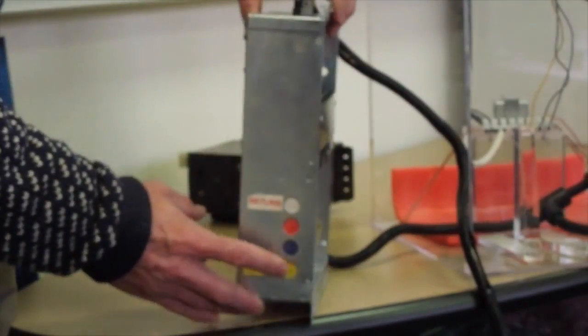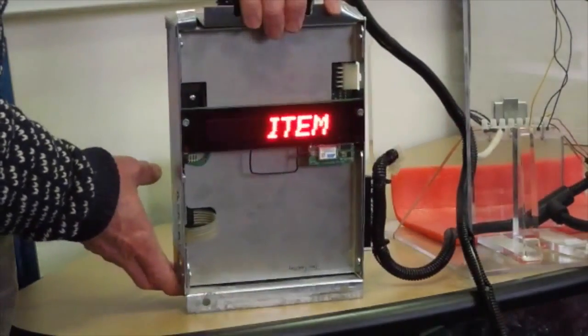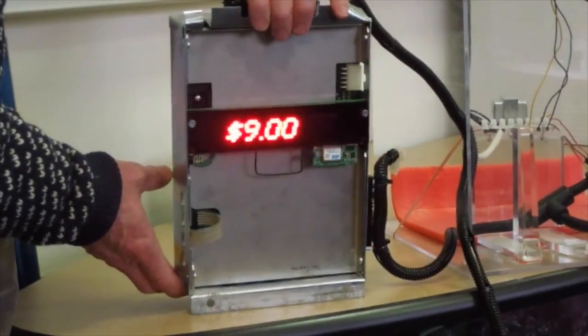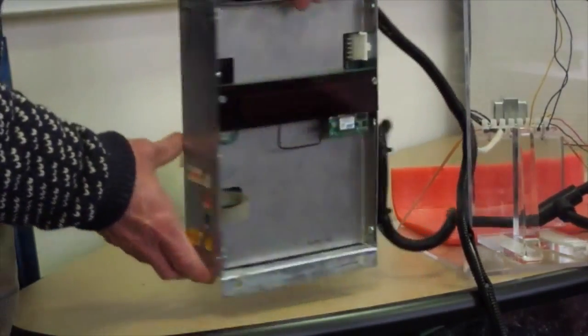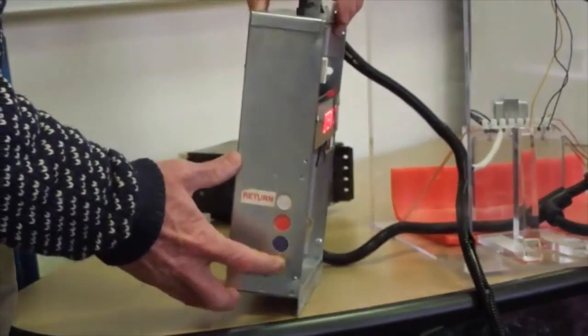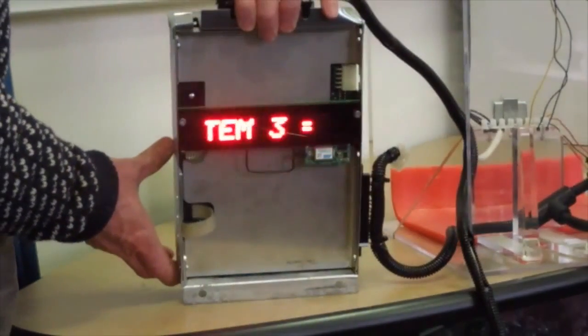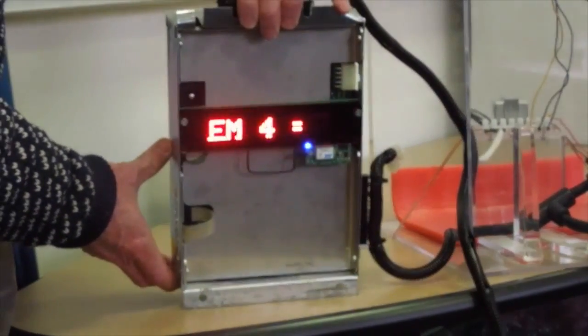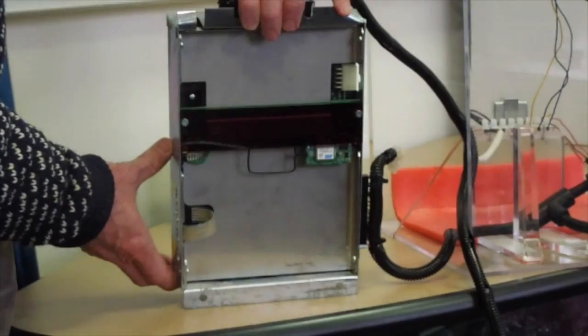Press the yellow button. Item number one we've programmed at nine dollars. Press the yellow button again. Item number two is eight dollars. Item number three we made seven dollars, and item number four is six dollars. So we have four unique prices.